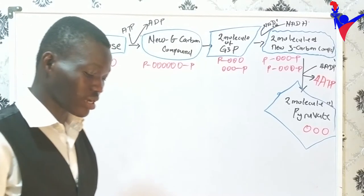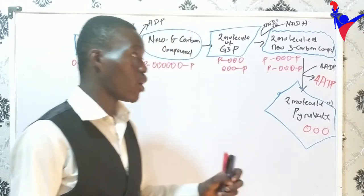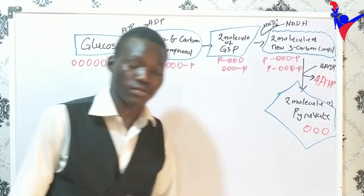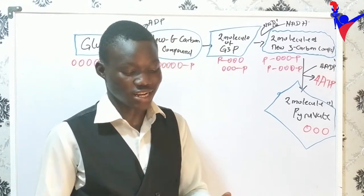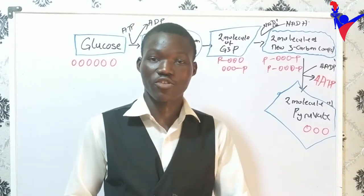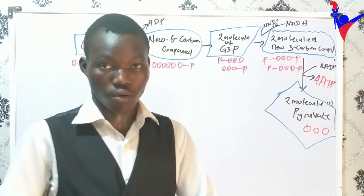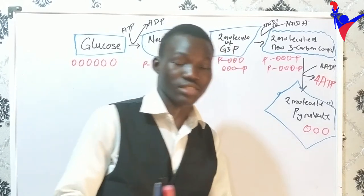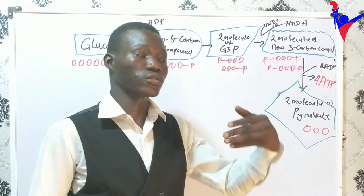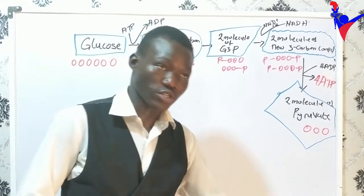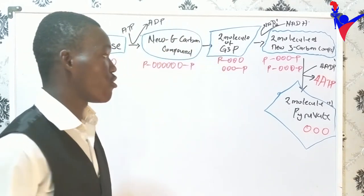Welcome back. In the previous class, we looked at the breakdown of glucose in glycolysis. Glycolysis breaks glucose down into pyruvate. This class is going to look at the fate of pyruvate under the anaerobic condition before going to the aerobic. The main purpose is that we are getting energy from the breakdown of organic compounds.